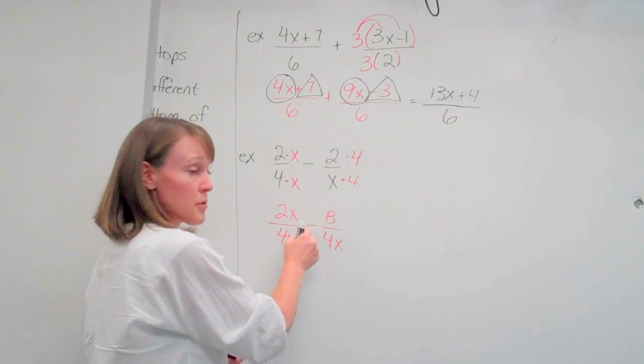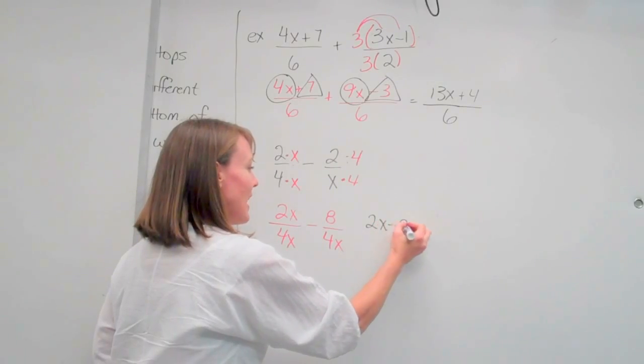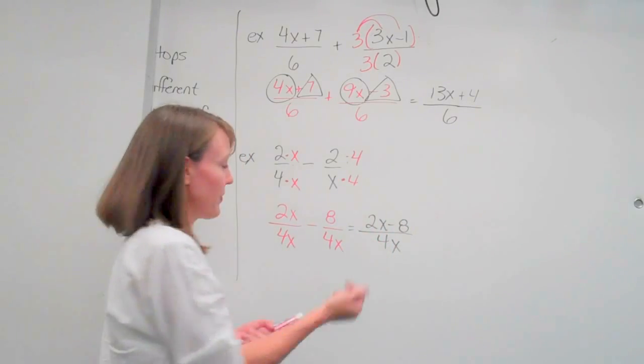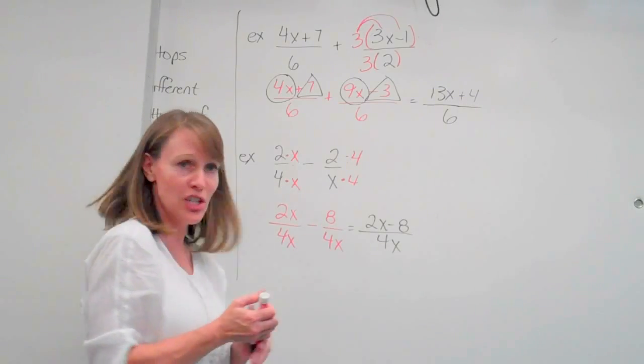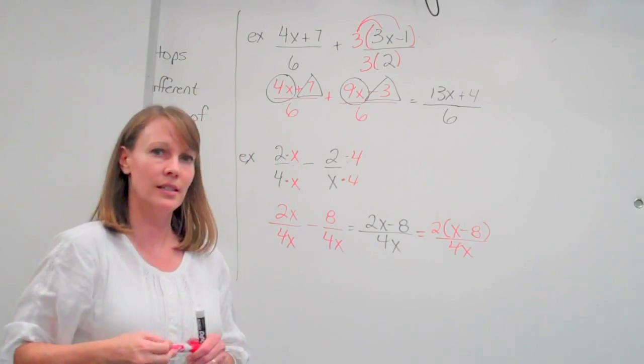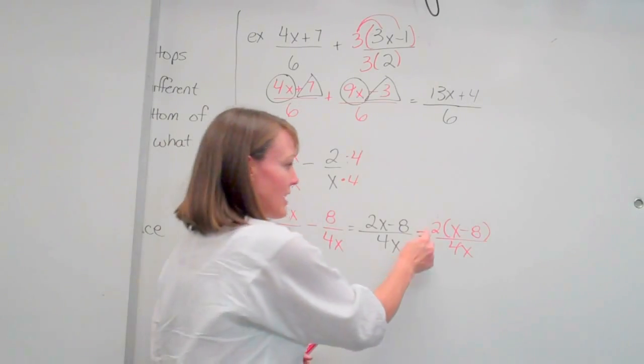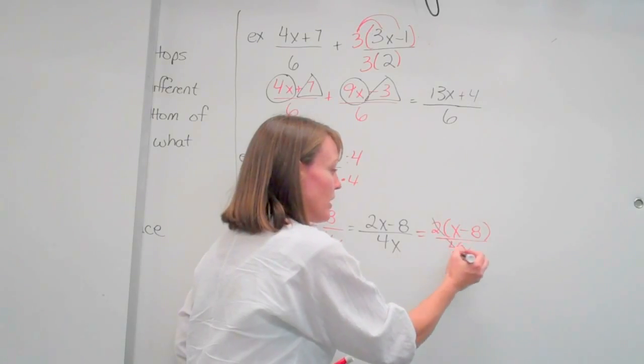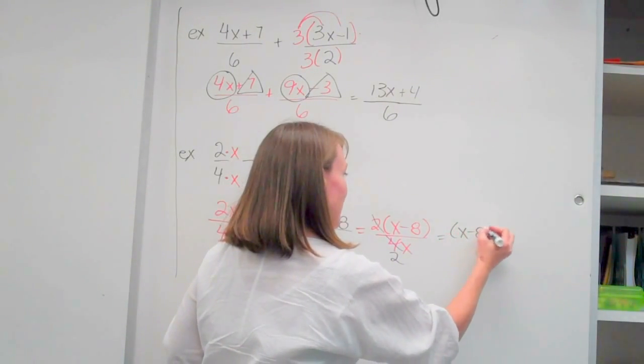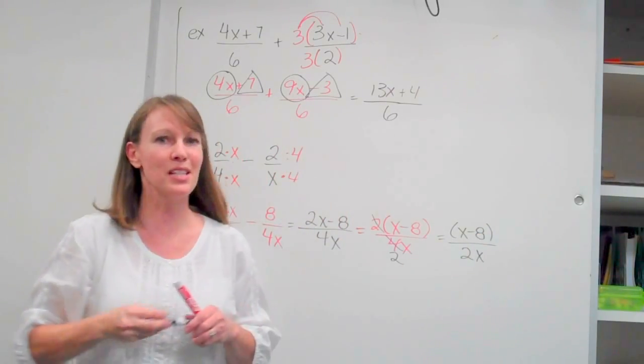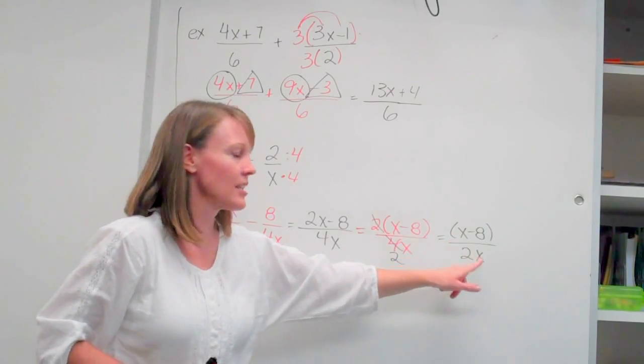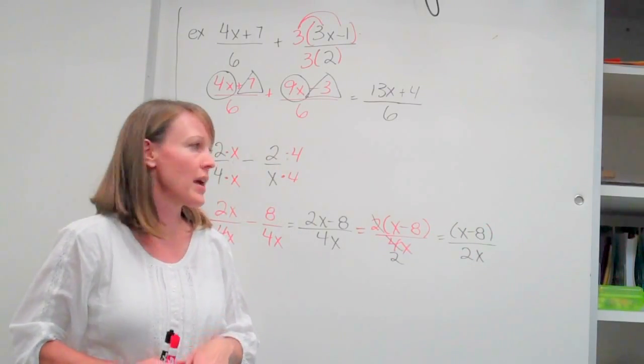We have common denominators. So now we can subtract our numerators. We have (2x-8)/4x. Are we done? We've got to see if we can factor. This can't be factored. Can this be factored? Yeah, look for the GCF first. The GCF is 2. Our leftovers are (x-8)/4x. Now we're looking at things that are unattached. So you can reduce the 2 and the 4. So your answer is going to be (x-8)/2x. I leave the parentheses there so that I remember I can't cancel out these x's because this is attached with a plus or a minus sign.